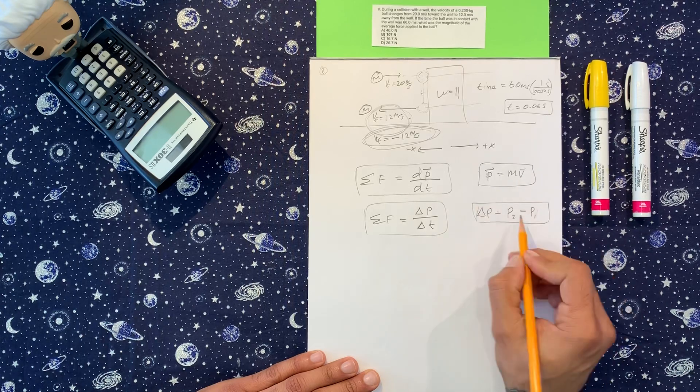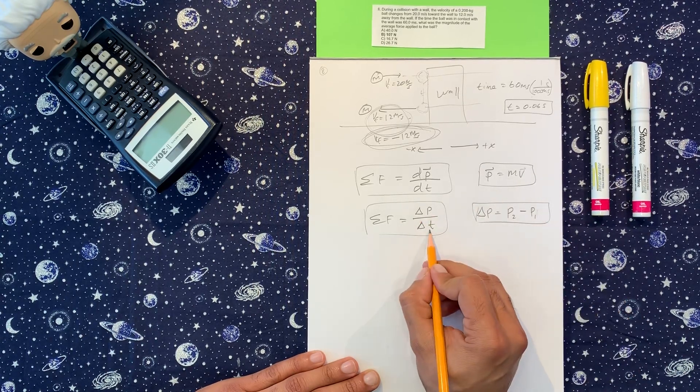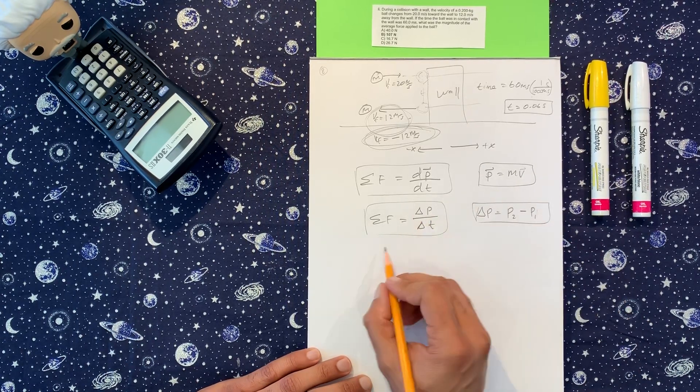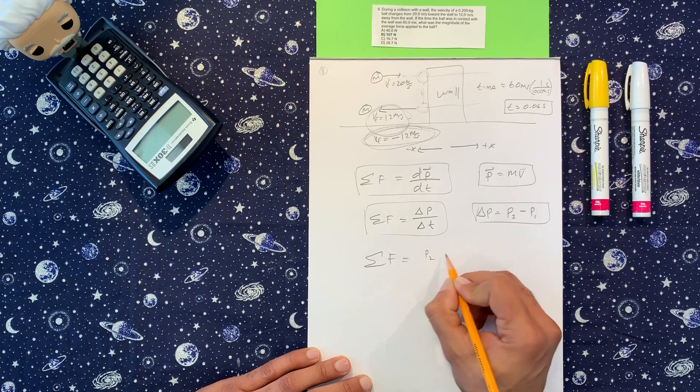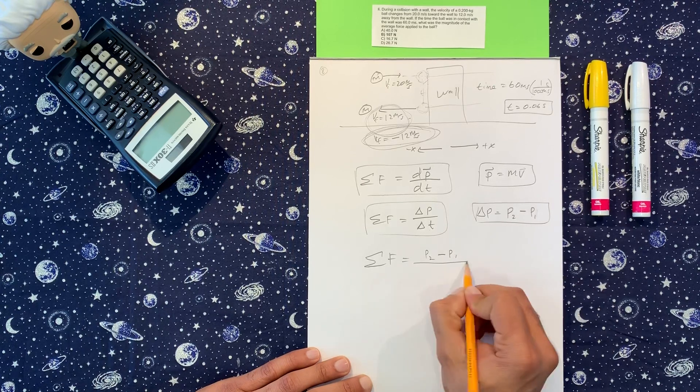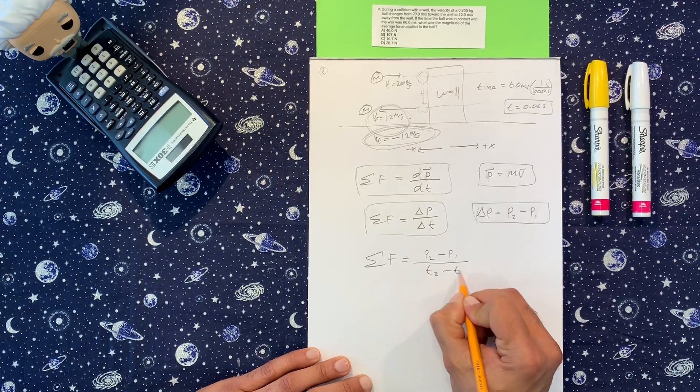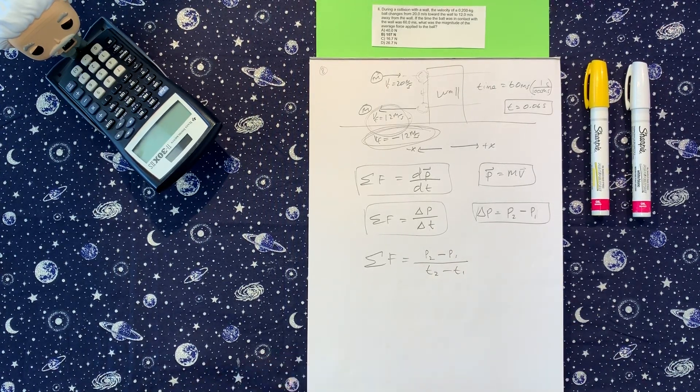Okay, so final minus initial that goes on the top, same thing for the bottom. So I'm going to rewrite this: the average force is going to be momentum final minus momentum initial over time final minus time initial.